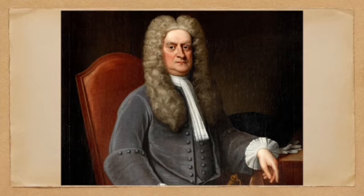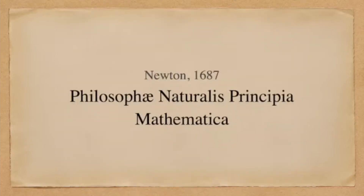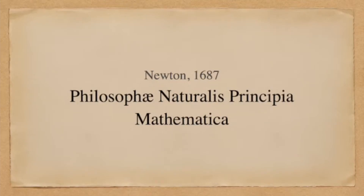The first person to propose a satisfactory description of gravity was Sir Isaac Newton. In his famous magnum opus, Principia Mathematica, Newton proposed a comprehensive set of laws describing the mechanics of motion. The most fundamental of these is Newton's first law — the law of inertia — which states that an object at rest will remain at rest unless acted on by an unbalanced force. Similarly, if it's moving with constant speed in a straight line, it will remain doing so unless acted upon by an unbalanced force.